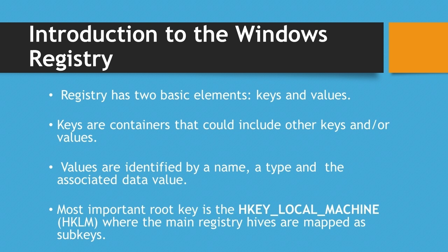The information in the registry is structured into basic elements: keys and values. Keys are containers similar to folders, but can include values or other keys. Values are objects similar to files, identified by a name, a type, and the associated data value. The highest keys in the hierarchy are called root keys, and the most important is the H Key Local Machine key, under which are mapped as sub-keys the contents of the four main registry hives: SAM, Security, Software, and System.